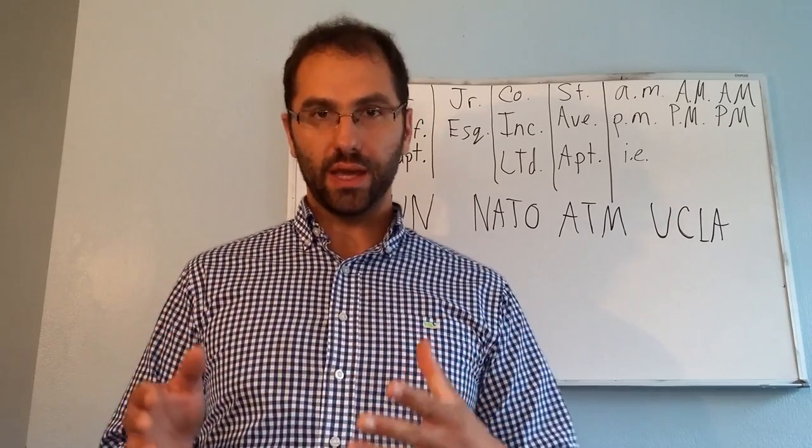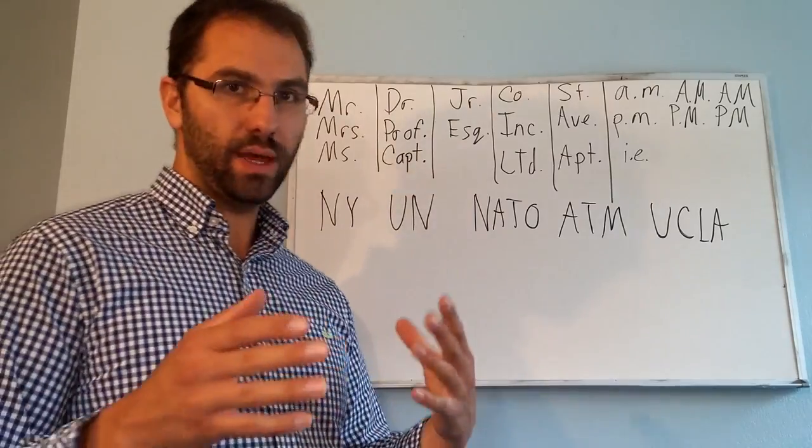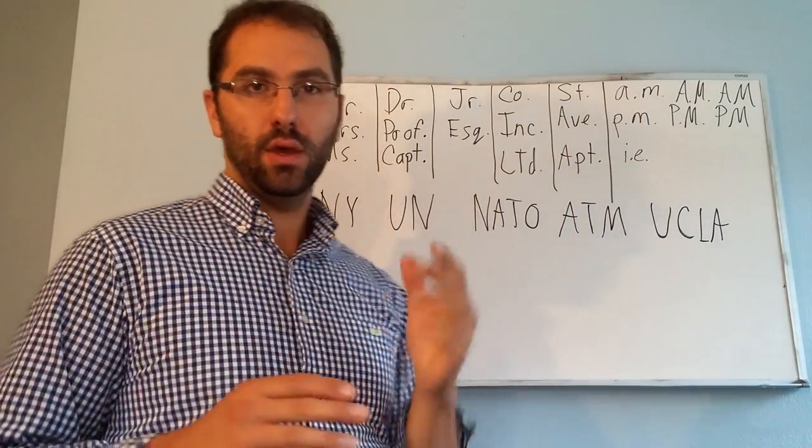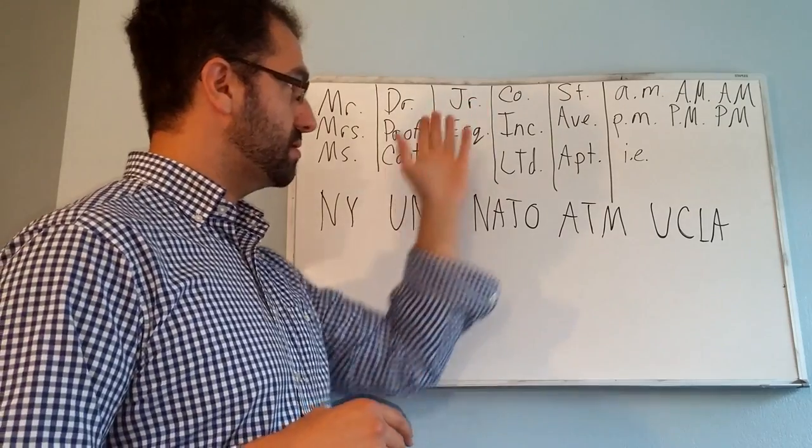You want to add periods after abbreviations of personal titles, or it could be something like small letters such as AM, or it could be a capital letter leading to a smaller letter like Junior, for instance.